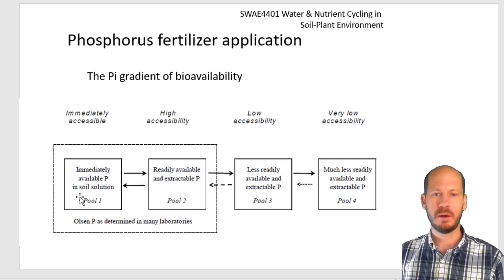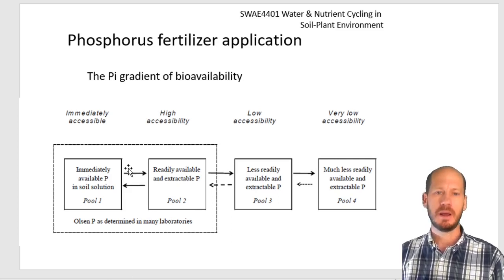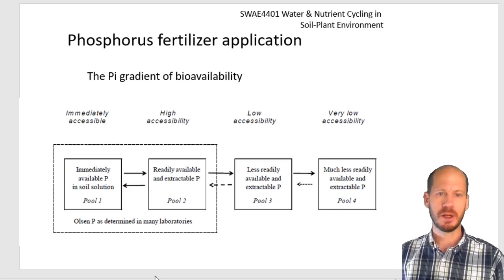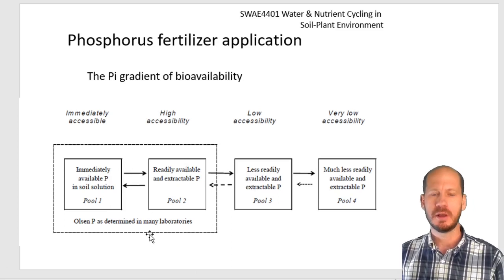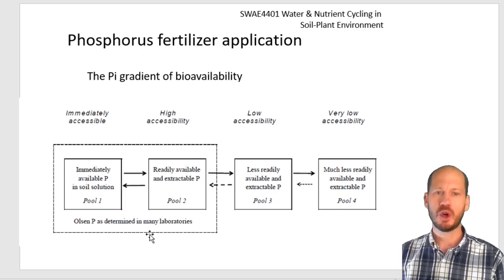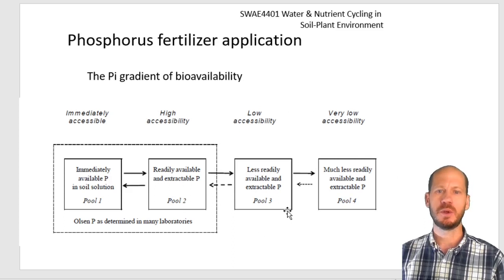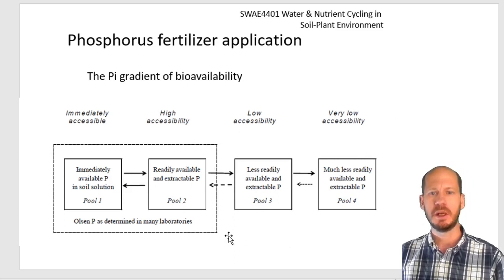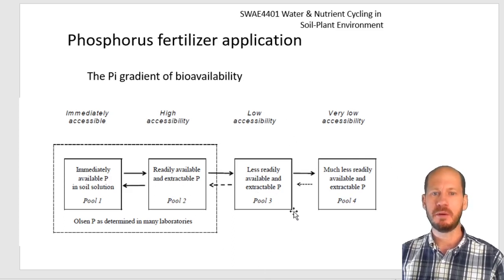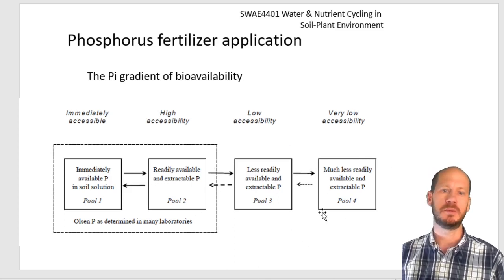Olsen phosphorus accounts for two things: one is the water-soluble phosphorus, directly in soil solution or easily soluble; and the other is the readily available, extractable phosphorus. The Olsen method accounts for this readily available phosphorus because sodium hydrogen carbonate at pH 8.5 desorbs some of the phosphorus from the solid phase. That desorbed phosphorus is accounted for in the extract. Beyond this, you have other phosphorus with low and very low accessibility, which are slowly cycled and can be bioavailable but only on the longer term.